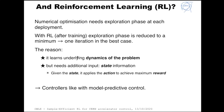Why did we look at reinforcement learning? Numerical optimization needs some exploration. There are algorithms that are very sample efficient, so this exploration phase might be short, but it still needs some exploration at each deployment. With reinforcement learning, after training, this exploration phase is reduced to a minimum — one iteration in the best case. The reason is that these algorithms learn the underlying dynamics of the problem, requiring an additional input: the state information. Given a state, they apply an action to achieve maximum reward. The final product after training is a controller, like model predictive control.